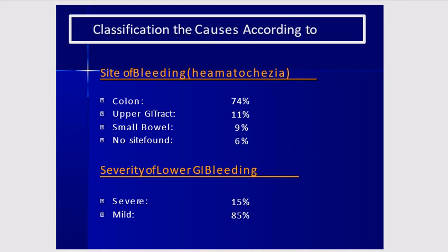The site of lower GI bleeding is: 74% in the colon, 11% from upper GI bleed, 9% in the small bowel, and no site found in 6%. Usually 15% of lower GI bleeds are severe, and 85% are mild and resolve on conservative management.